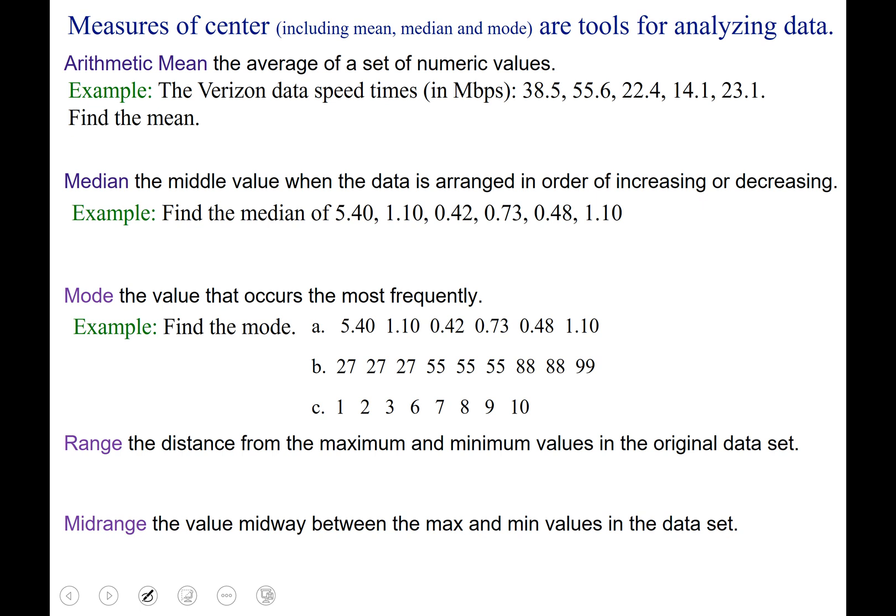Measures of center, including mean, median, and mode, are all tools for analyzing data. So let's discuss the arithmetic mean, and you've really heard of it as the average. It's the average of a set of numeric values. So when you hear arithmetic mean, if you need to think average for a little bit, that's fine, but then start to transfer that into an average is the arithmetic mean. Contrary to the geometric mean, there are different types of means.